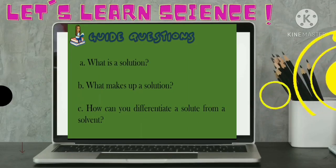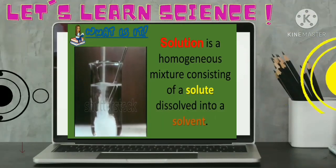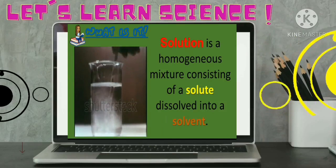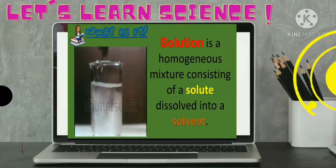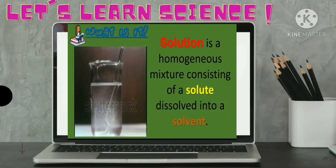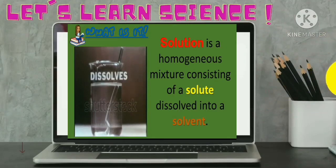Now, let us proceed with our discussion. When one substance dissolves into another, a solution is formed. A solution is a homogeneous mixture consisting of a solute and a solvent. It means that the composition of the mixture is uniform all throughout. So, when you pour sugar into the water and mix it, you are forming a solution.